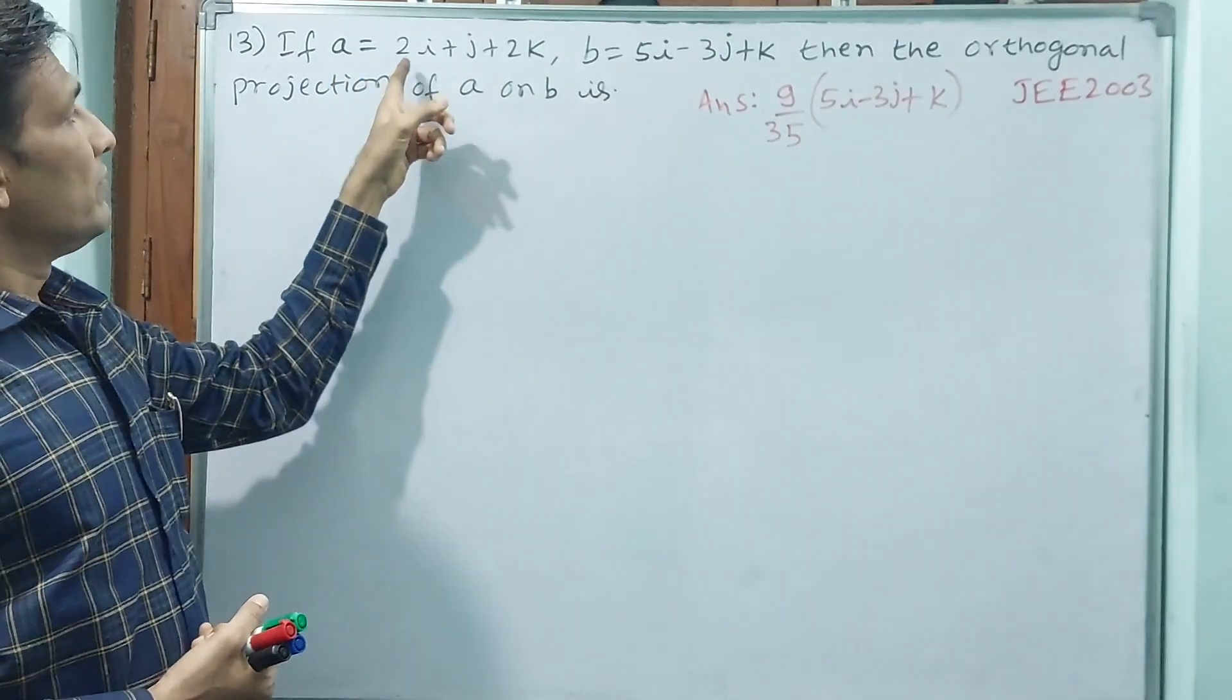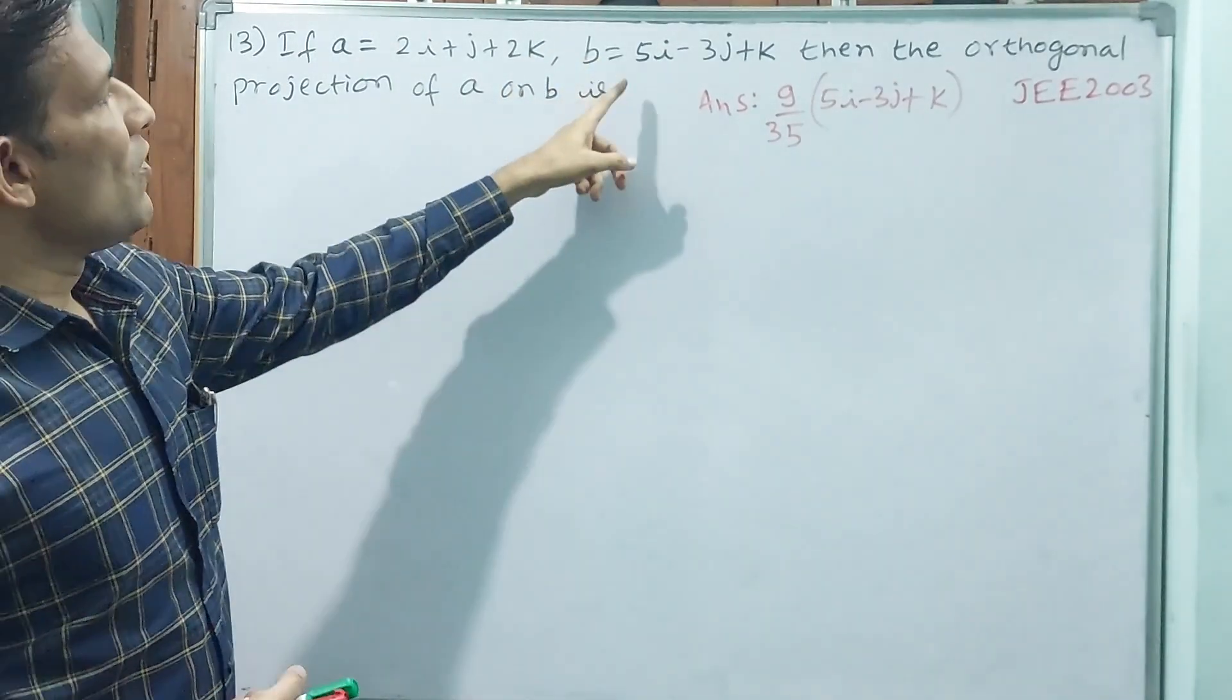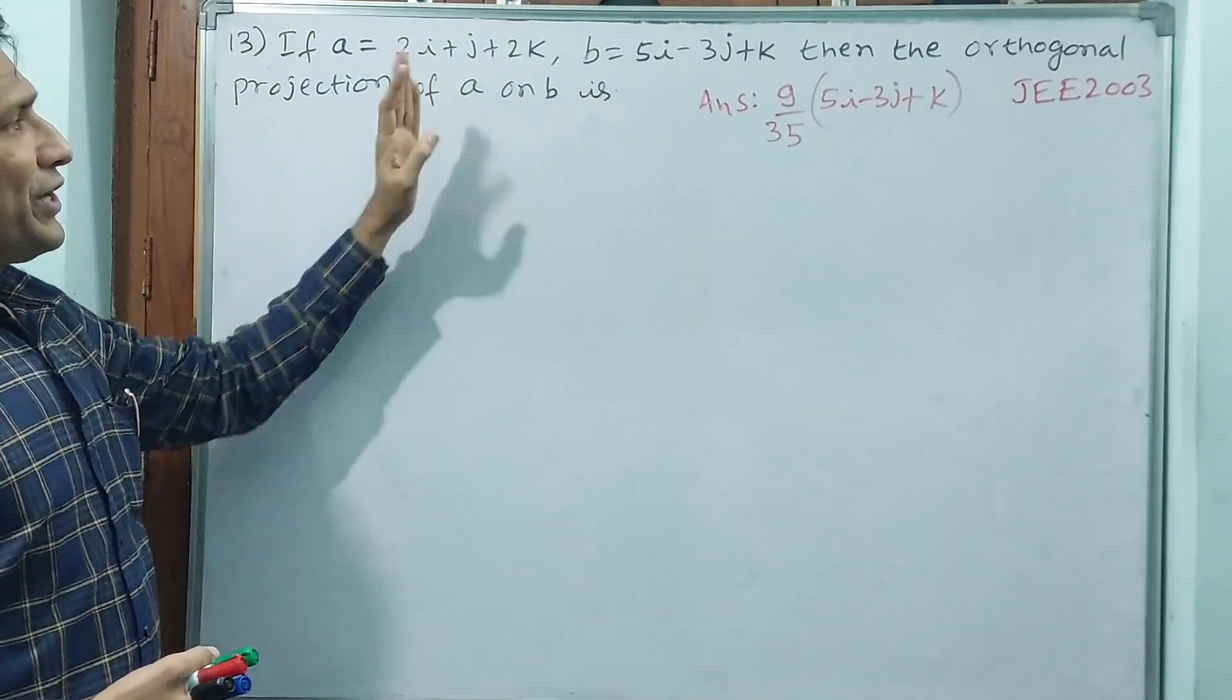This is our study in 2003. If A is vector 2i plus j plus 2k and vector B is 5i minus 3j plus k, then the orthogonal projection of A on B.